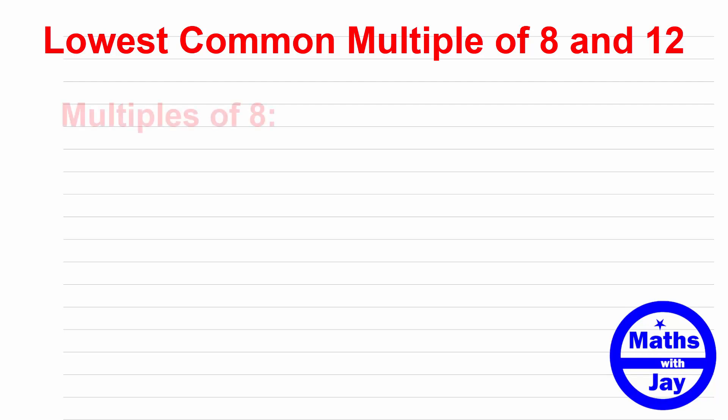So first of all we'll write down the multiples of 8 or some of them. So we start with the number itself, 8, and then it's just really writing down 2 times 8, 3 times 8 and so on.